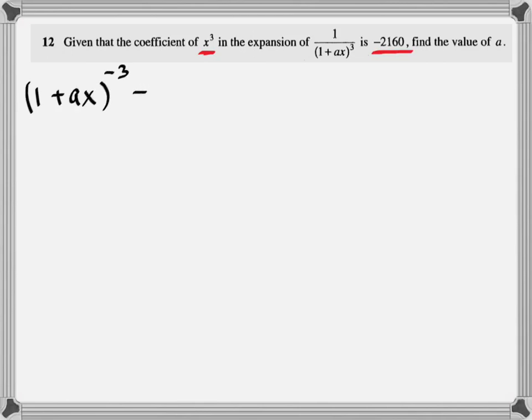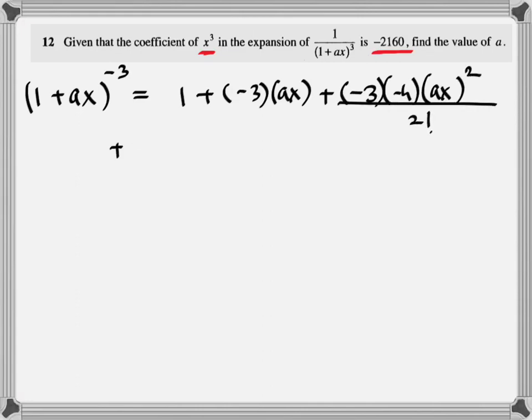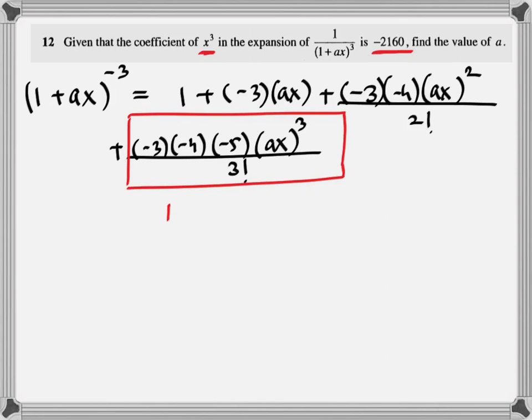Another example. Now, they are talking about only a particular coefficient. (1 + ax)^(-3). If I expand the complete binomial expansion. If I do the complete binomial expansion, this is what I am getting. But, remember, they were only asking me about the x^3 term. So, remember, for the x^3 term, the power should be 3. The power of ax should be 3. In the denominator, it should be 3 factorial. And, there should be 3 terms related to n written on the numerator.